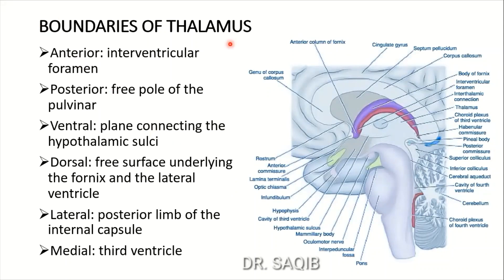Let's see the boundaries of the thalamus. Anteriorly, it is the interventricular foramen - this is the anterior boundary. This is the hypothalamic sulcus and above it is the thalamus. The interventricular foramen through which it communicates with the lateral ventricle. The lateral ventricle is the cavity of the telencephalon and the third ventricle is the cavity of the diencephalon.